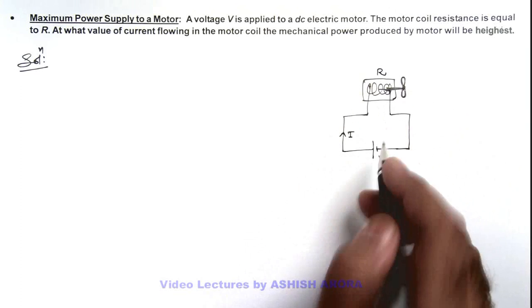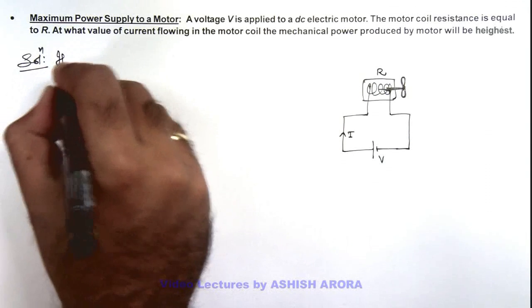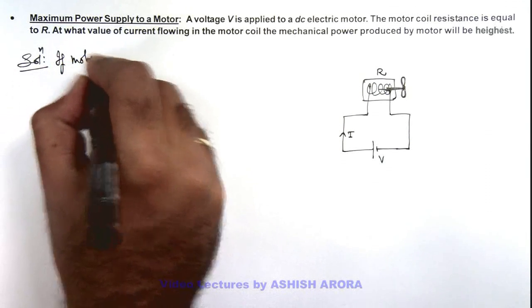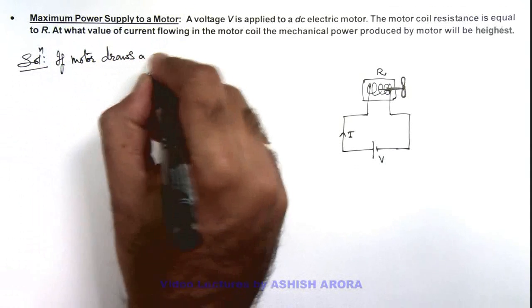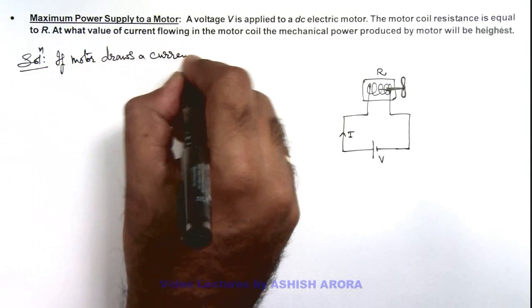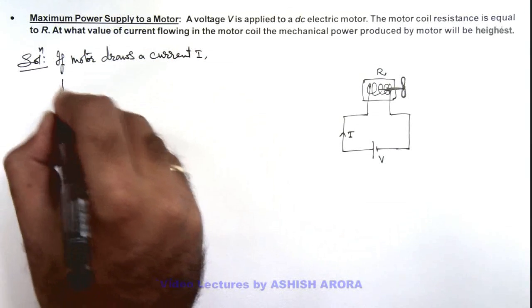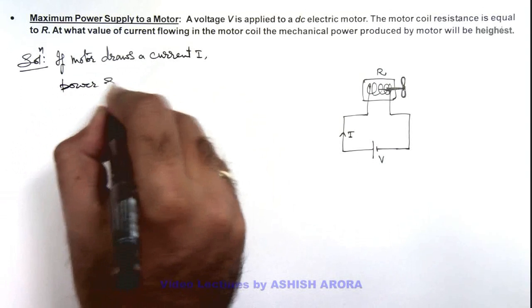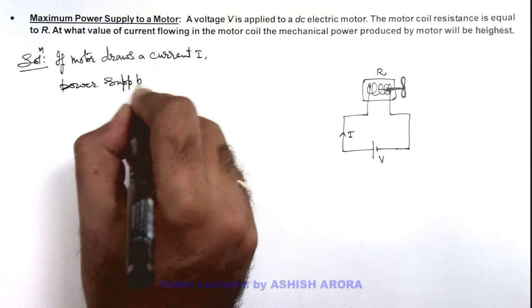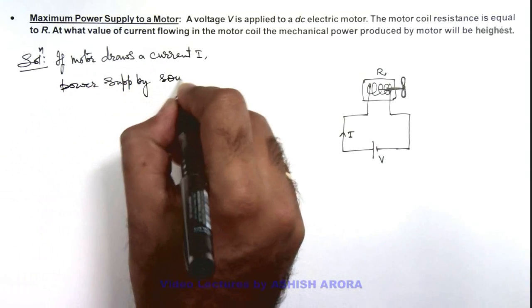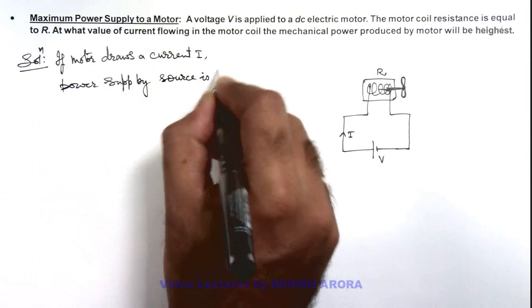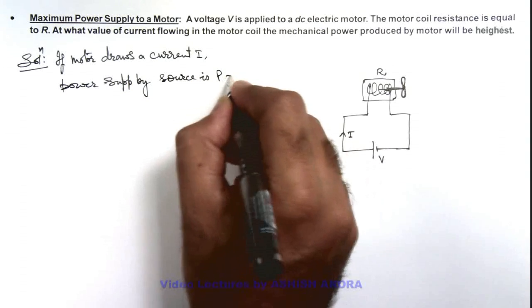So in this situation we can write if motor draws a current I, the power supplied by source is the power which the source is supplying will be VI.